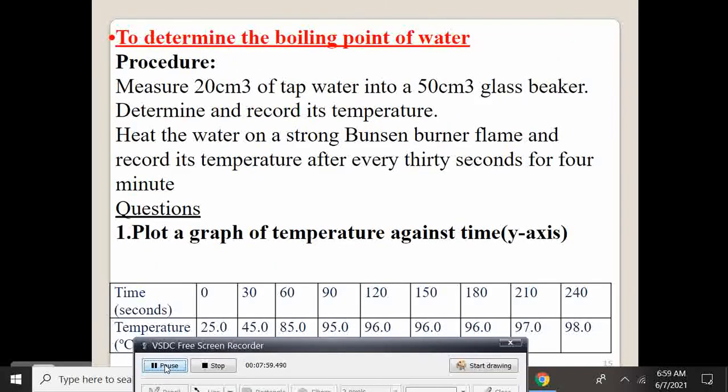For instance, to determine the boiling point of water, that's an experiment, the procedure goes, measure 20 cm3 of tap water into a 50 cm3 glass beaker. Determine and record its temperature. Heat the water on a strong Bunsen burner flame and record its temperature after every 30 seconds for 4 minutes.